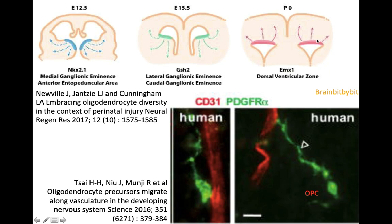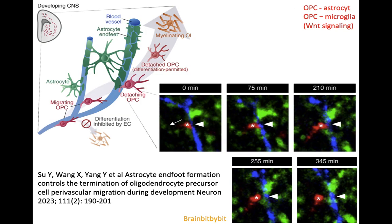The oligodendrocyte precursor cells migrate along the vasculature, adhering to the abluminal side of the endothelial cells and migrating along the vessel. Sometimes they have a very long leading process that remains in contact with the vessel — an analogy with the radial glial cell and neurons. The OPC is probably fed by these endothelial cells, which is why it has to remain in contact. OPCs persist throughout life and can migrate to areas of demyelination to remyelinate and give rise to new oligodendrocytes, and during life they also continue to migrate along vessels.